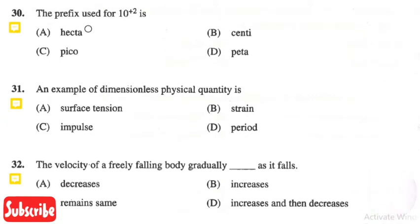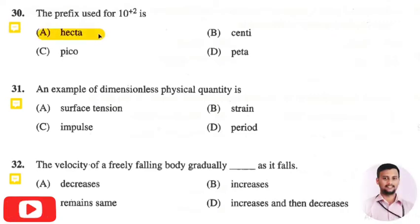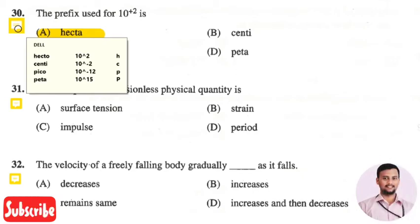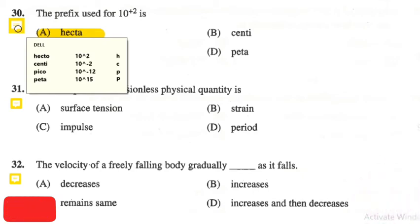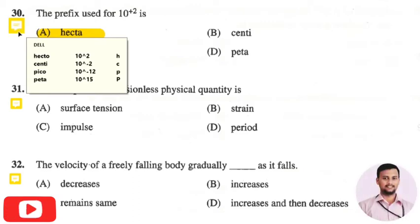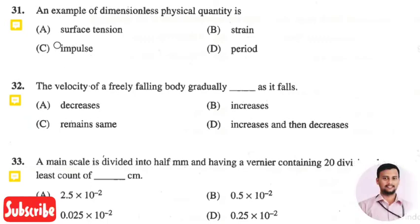The next question is: the prefix used for 10² is — the right answer is option one: hecto, denoted by h. Some examples of prefixes: hecto for 10², centi for 10⁻², pico for 10⁻¹², and peta for 10¹⁵. There are many more prefixes for powers of ten.